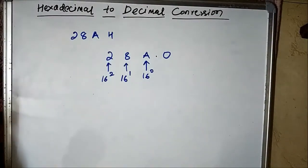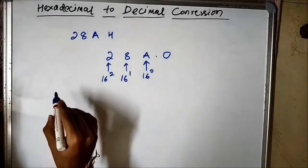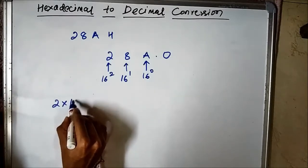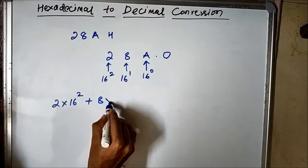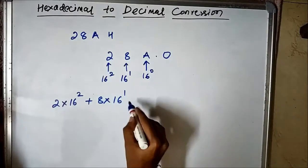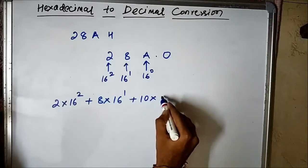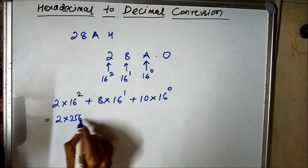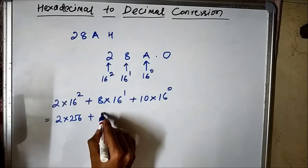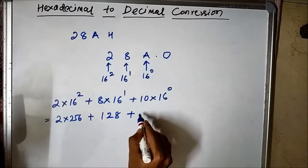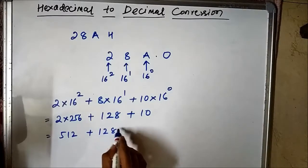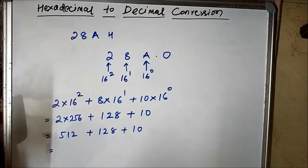To convert 28Ah to decimal, we multiply the respective digits with their weight values: 2 × 16² + 8 × 16¹ + 10 × 16⁰. That equals 2 × 256 plus 8 × 16, which is 128, plus 10. So: 512 + 128 + 10, giving us 640 + 10.